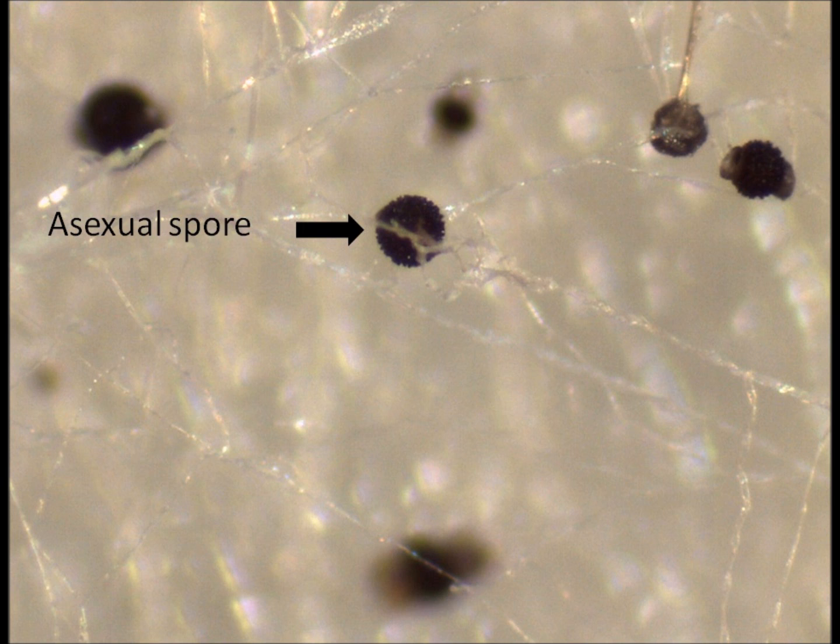So what you need to do now is to dissect out some of the sexual spores and prepare a wet mount so that you can observe them at higher magnification using the compound microscope.